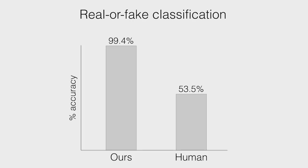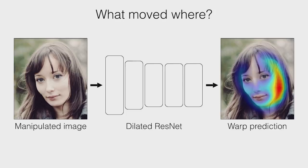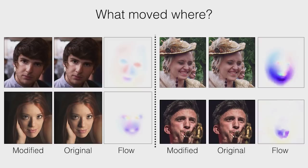Please see our paper for more experiments and details. Once we've found that an image has been edited, we can also predict what parts of the image were manipulated and how they were warped. Here we see an overlay on the image showing how much we think that region has been warped. We automate the label generation process by computing an optical flow field from the original image to the manipulated, then train a model to predict this flow field given only a manipulated image as input.